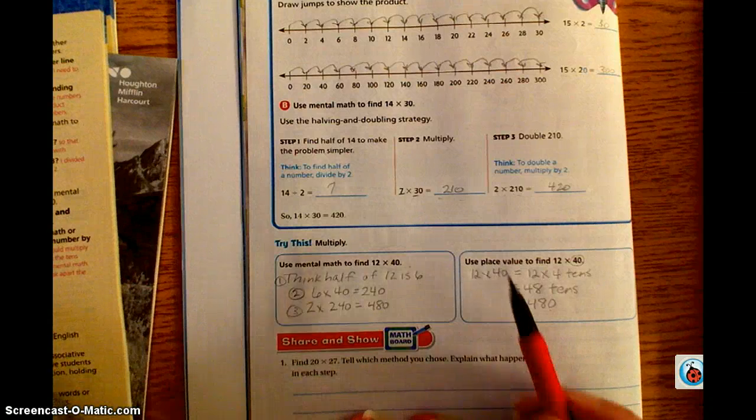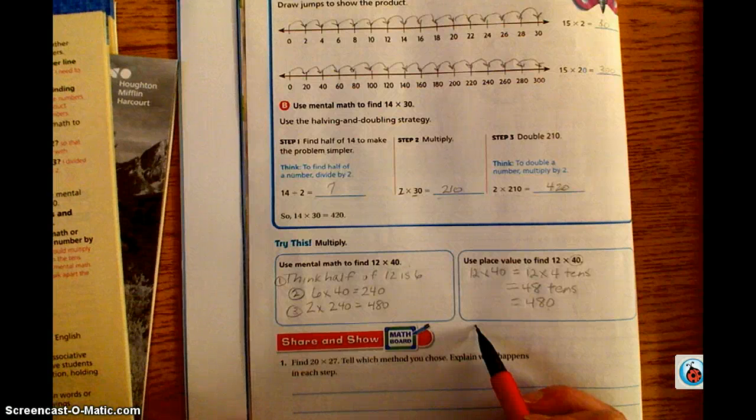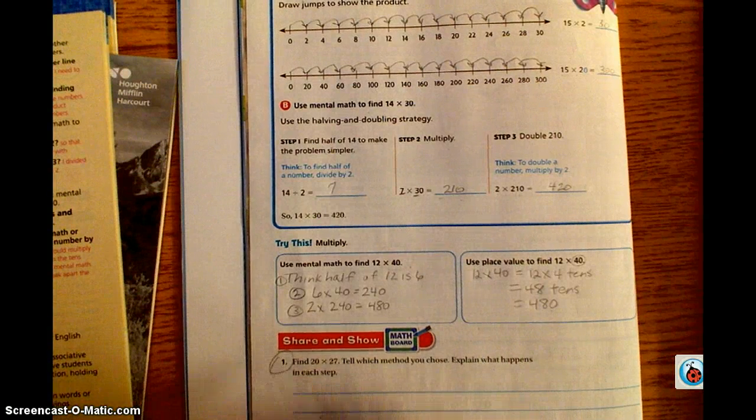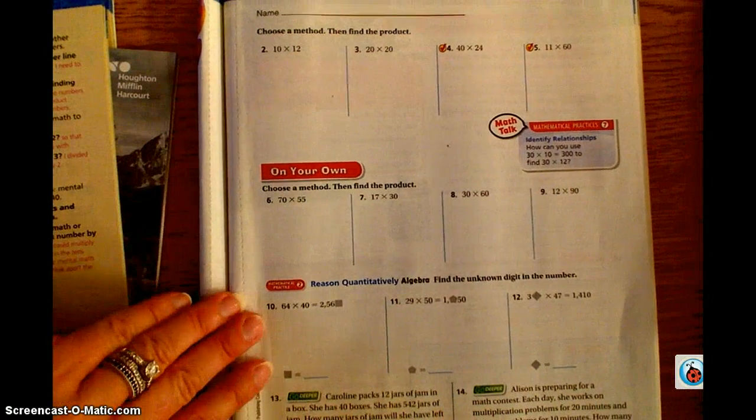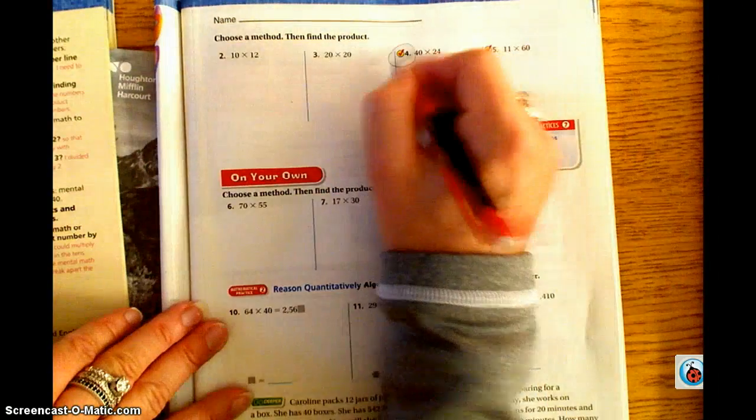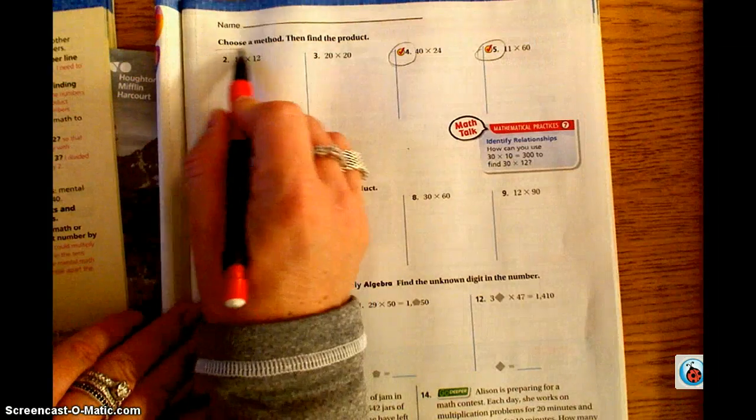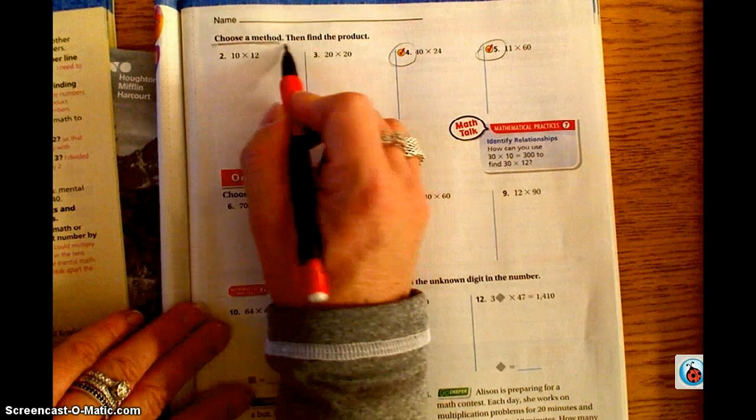So you have multiple ways that you can actually solve these multiplication problems. We just went through a few of those here today. I'm going to have you jump down to the share and show that starts on page 146 with number 1. I'm going to flip over to page 147. You're going to work through making sure to complete number 4 and number 5. It does tell you to choose a method. So you choose the method that works best for you in order to find the product.